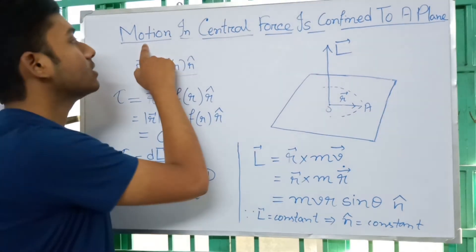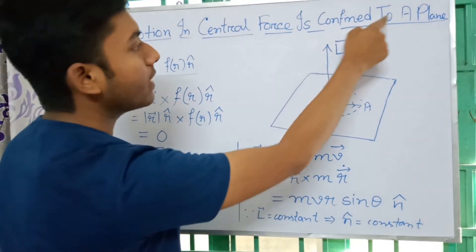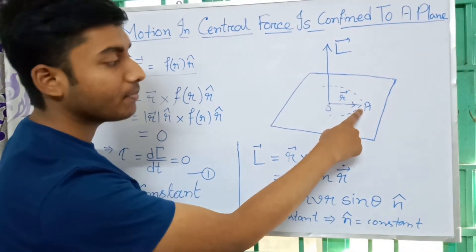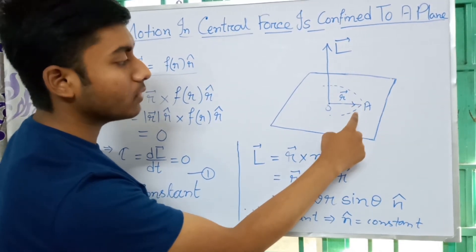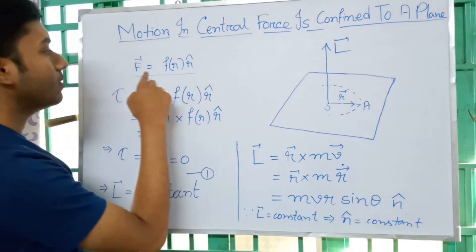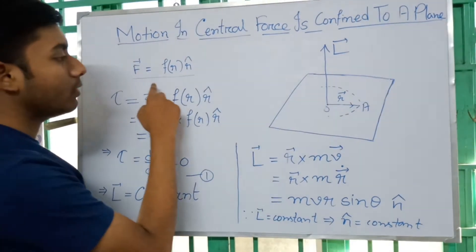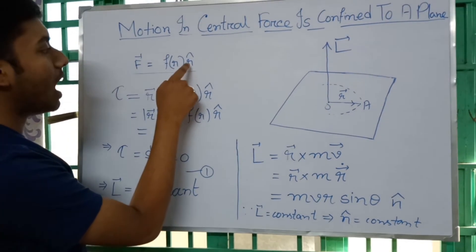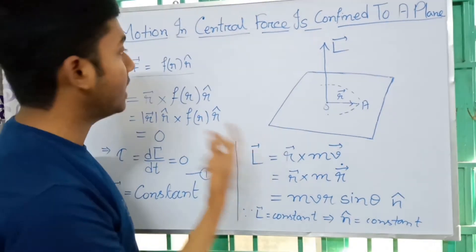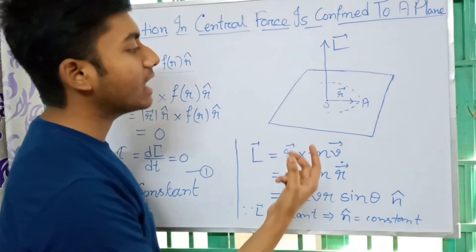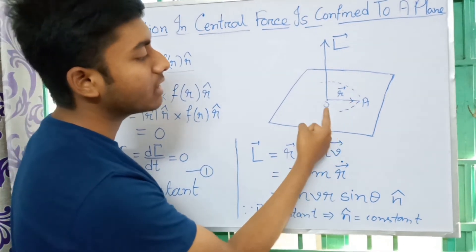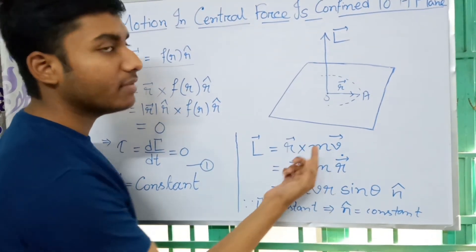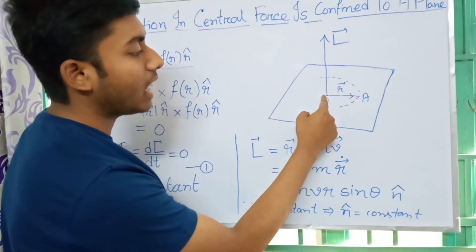Today our topic is: motion in central force is confined to a plane. Assume a particle at point A which is moving under a central force. By the property of central force, the central force F equals F(R) · R-cap, where F(R) is a function of R. R is the distance between particle A and center O, and R-cap is the unit vector directed along the line OA.